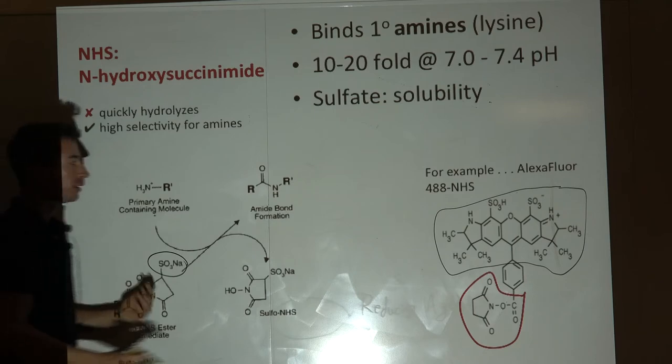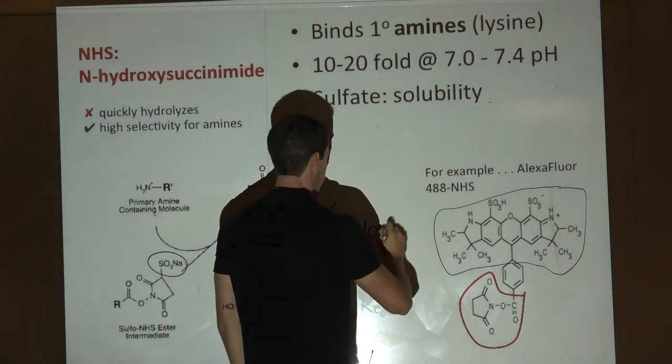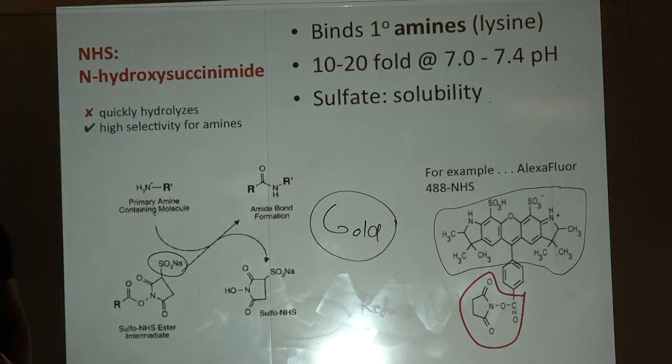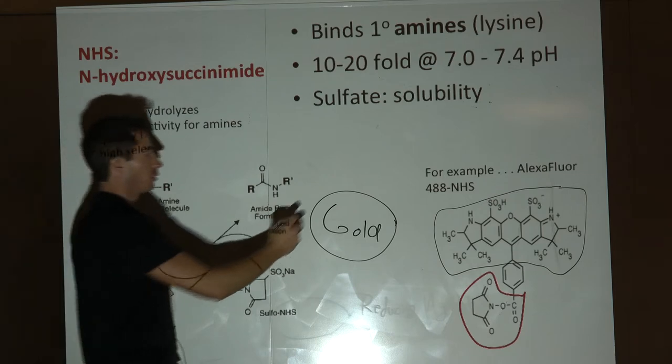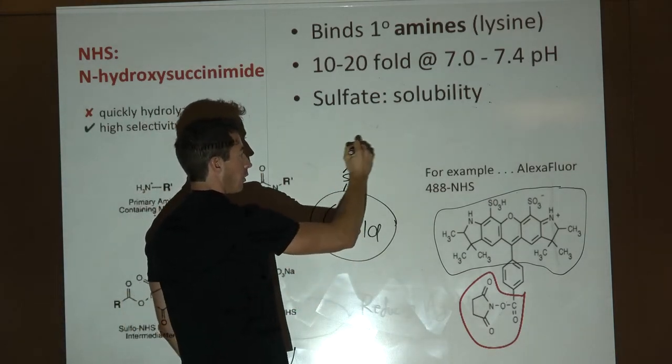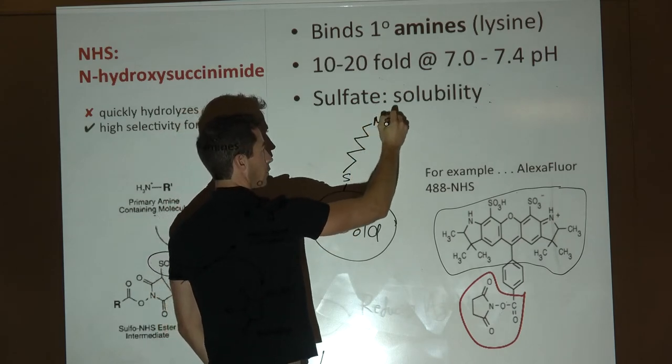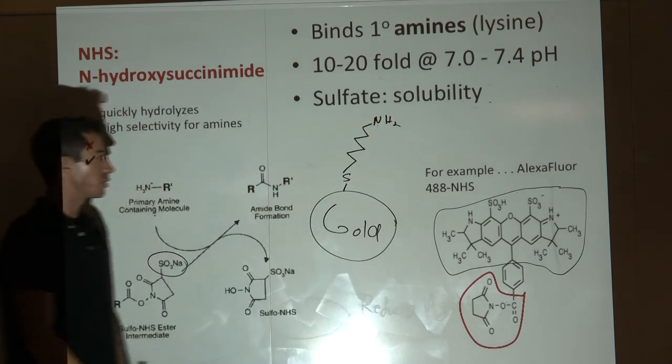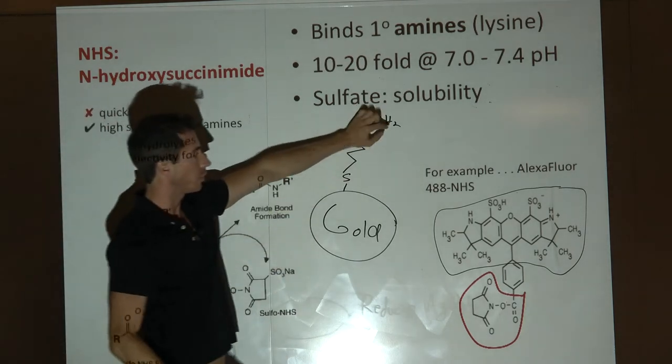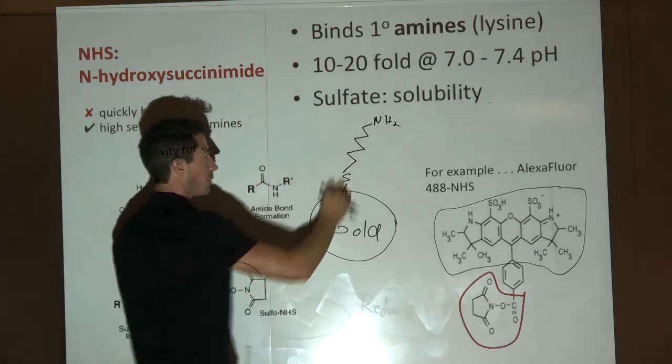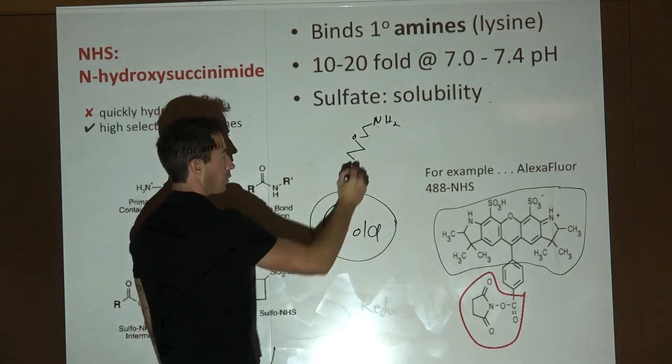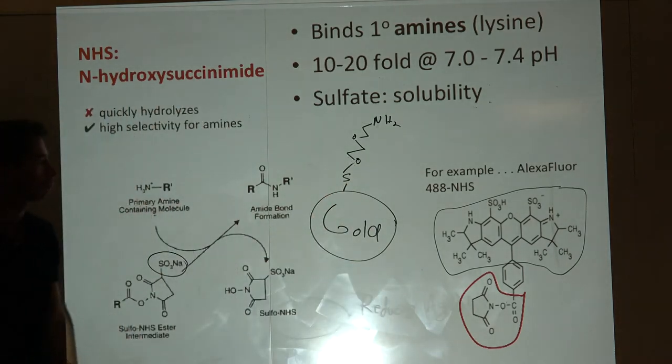We would add this to our nanoparticle that should have primary amines. If we're adding this to a nanoparticle without primary amines, we won't have any reaction. In choosing these tools, you have to characterize what's on your nanoparticle surface. If you had gold, maybe you could add a thiol with an amine first, then label it.